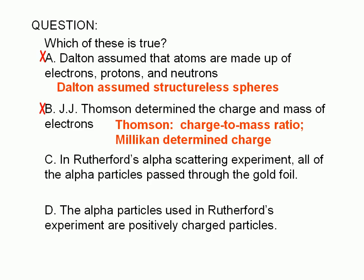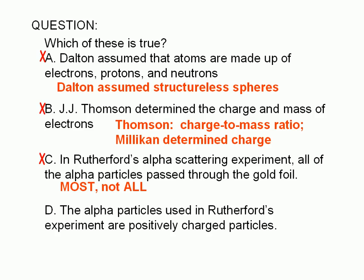Choice C is false as well. Most, not all, of the alpha particles passed through. The striking result of Rutherford's experiment is the back-scattering of a small number of alpha particles. This led to the notion that the mass of the atom is concentrated in a very tiny nucleus.